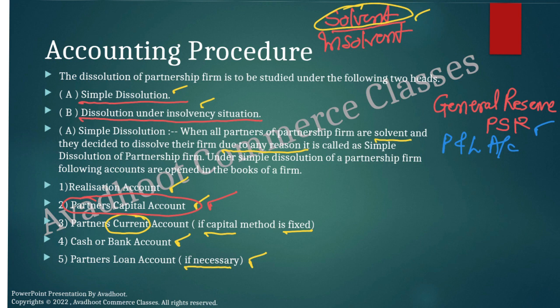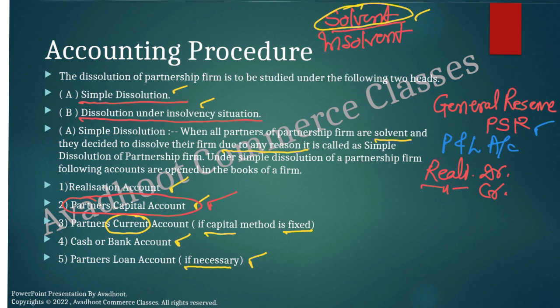Afterwards, transfer all assets to the realization account debit side at book value, whereas liabilities are transferred to the realization account credit side at book value. In case of debtors — suppose the balance sheet shows debtors of 10,000 less provision for doubtful debts of 500, net 9,500 — write realization account debit side 10,000, credit side by provision 500. After transferring all balance sheet items to the realization account, partner's capital account, and cash/bank account, that is the first step.